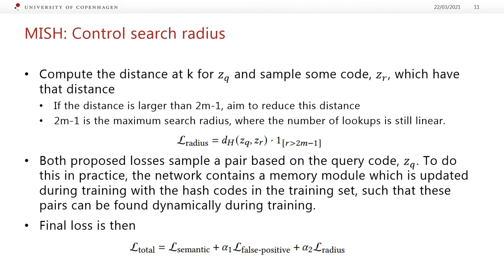The second loss aims to control the search radius. To do this, we use a pairwise approach: given a query q, we compute the distance at k for q and sample some codes r which have that distance. If this distance is larger than 2m-1, we need to reduce it; otherwise it is fine. The constant 2m-1 is the maximum search radius where the number of lookups is still polynomial — going over this leads to an exponential number of lookups. So if q and r have a distance higher than 2m-1, we simply aim to reduce the distance between the two strings, which effectively reduces the distance at k.